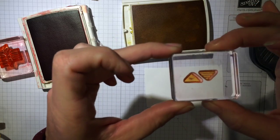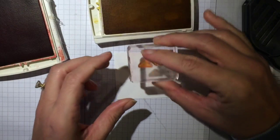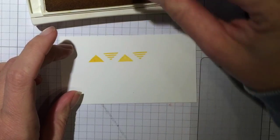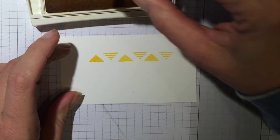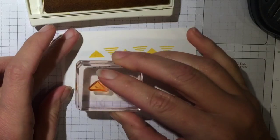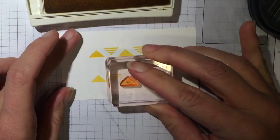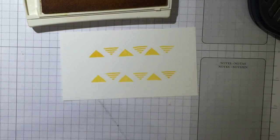All right. So I placed my triangles like this on my clear block. And I'm just going to go make a little pattern like this in the middle of my paper, just a scrap. And then I'm going to do it about an inch away like this.